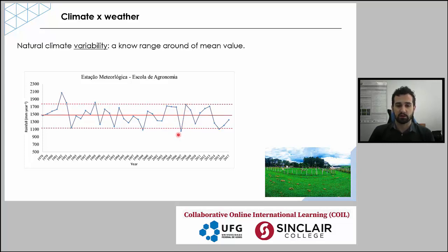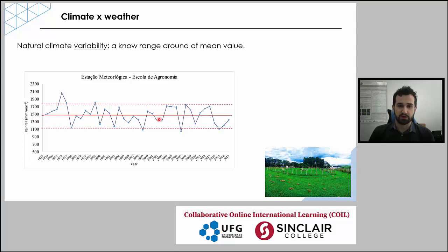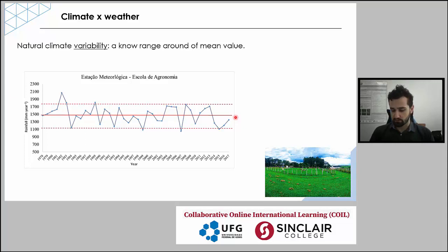Sometimes people say that the difference between one year and another is climate change — but that is a wrong definition, because this change from one specific year to another is a natural condition within the natural climate variability of the region. Climate can vary within a low range around the mean value — this is natural. When you talk about climate change, you need to pay attention to natural variability to determine whether or not a real change in climate is occurring.